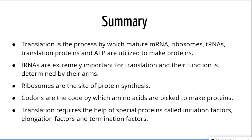In summary, translation is the process by which mature mRNA, ribosomes, tRNAs, translation proteins, and ATP are utilized to make proteins. tRNAs are extremely important for translation and their function is determined by their arms. Ribosomes are the site of protein synthesis. Codons are the code by which amino acids are picked to make proteins. Translation requires the help of initiation factors, elongation factors, and termination factors. In the next video, we will analyze the individual steps involved in translation. Thank you for watching and see you on the next lecture.